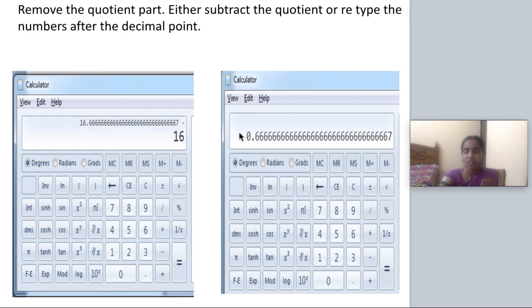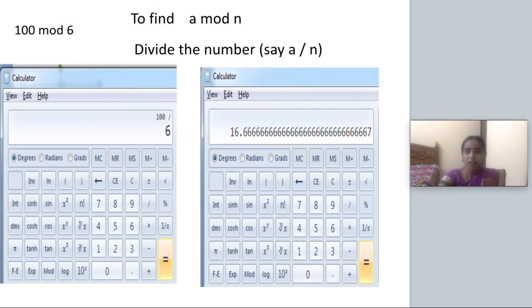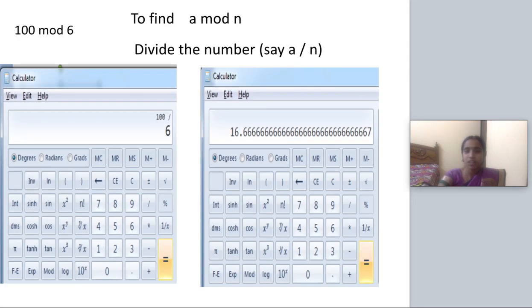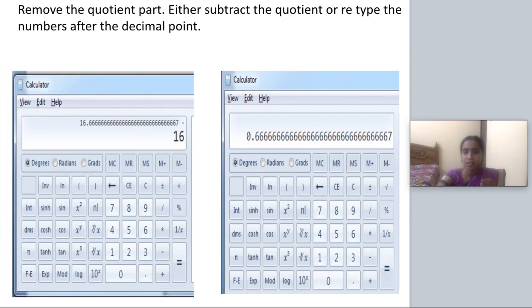retype the fractional part alone. For example, when I divide 100 by 6, I got 16.66667. So instead of retyping this large number, I can just put minus 16, so that I'll be getting 0.66667. Or else I can retype it as 0.66667. Whatever it may be, I want only the numbers after the decimal point.